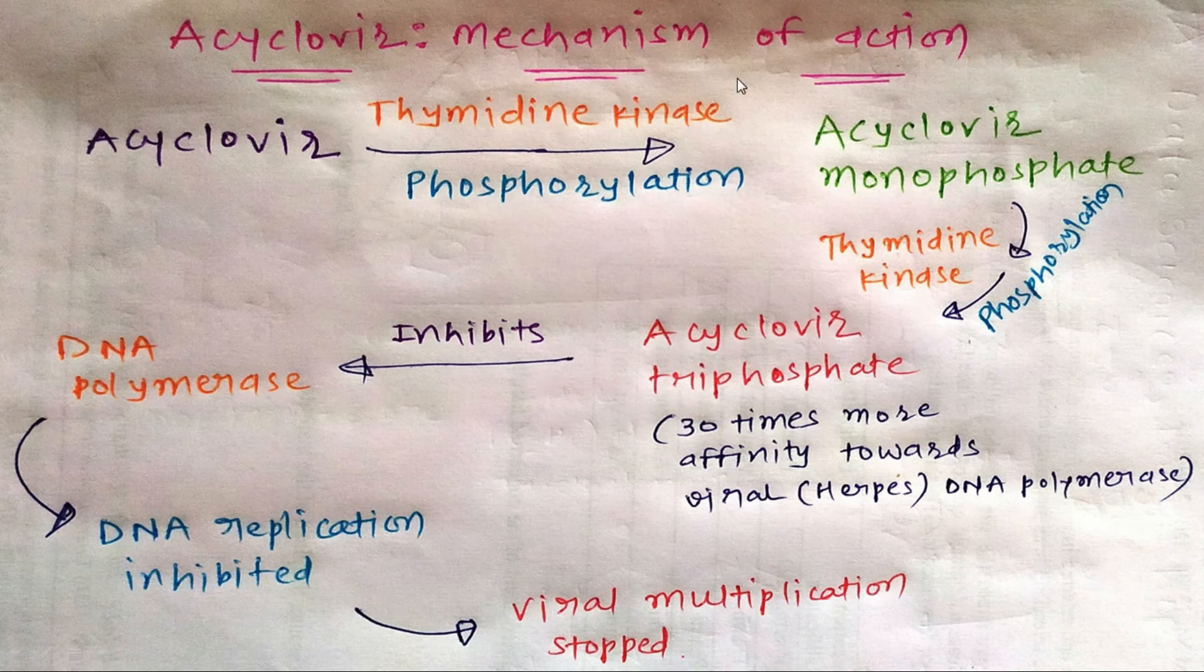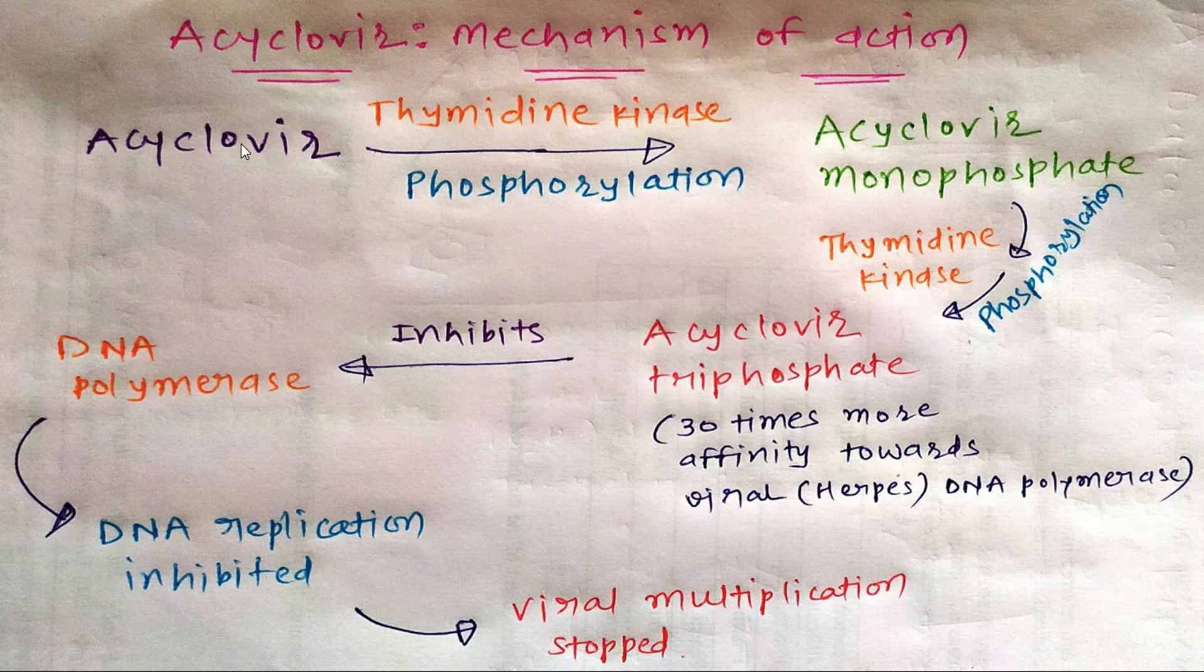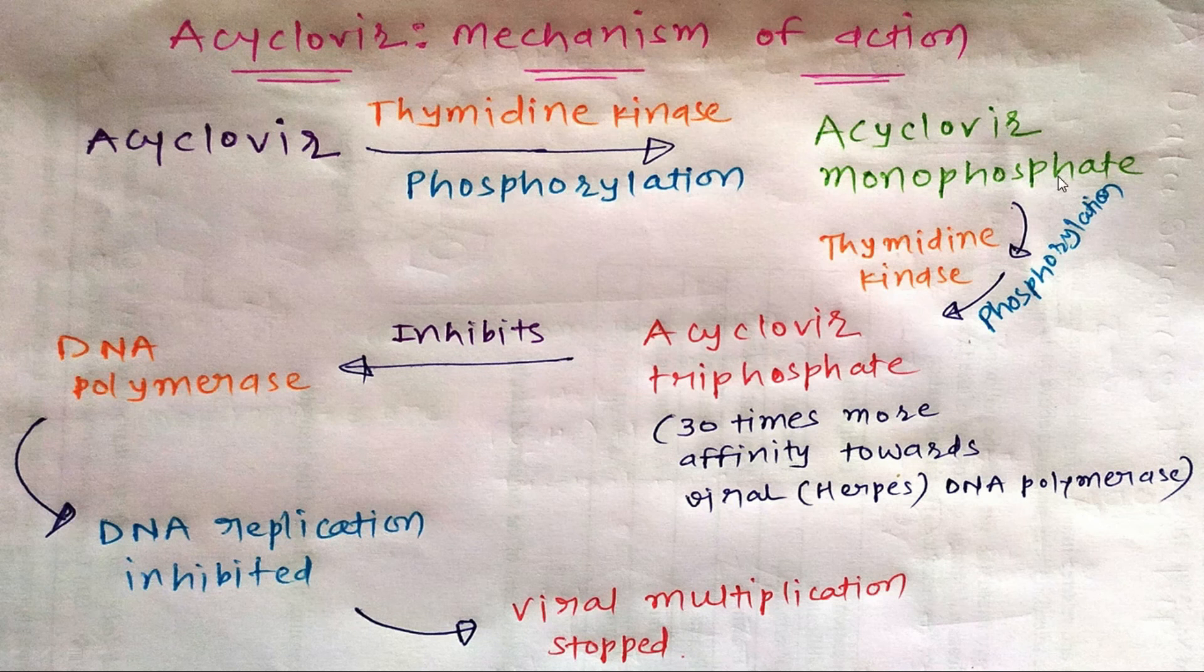Next is the mechanism of action of acyclovir. Due to the effect of the enzyme thymidine kinase, phosphorylation reaction occurs, and acyclovir is converted into acyclovir monophosphate. After that, due to the same enzyme thymidine kinase, another phosphorylation occurs, and acyclovir monophosphate is converted into acyclovir triphosphate.